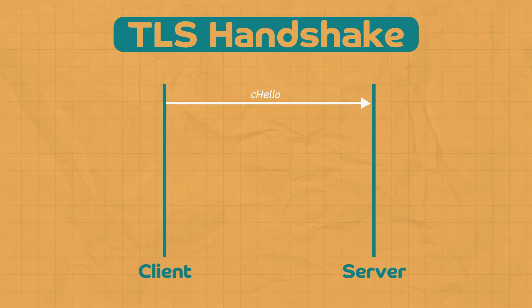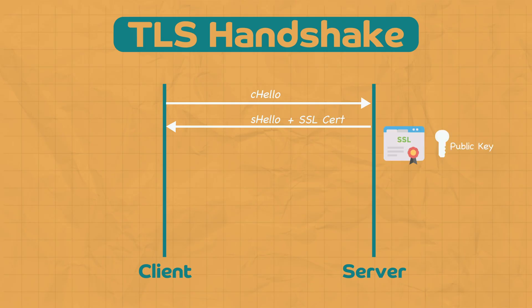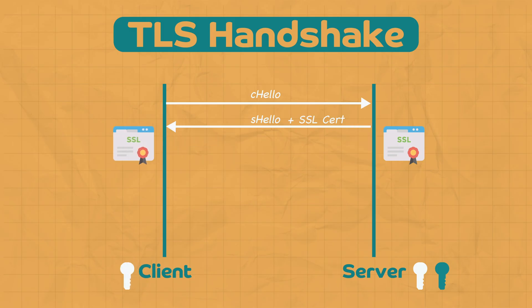The server then responds with two things: a 'server hello' — also a random string of bytes generated by the server — and additionally it sends the client an SSL certificate. In the SSL certificate there is a public key, which comes from the public-private key pair the server has. The server's public key is contained in this SSL certificate. Once the client has the public key, it uses it to generate another random string of bytes called the pre-master secret.